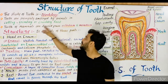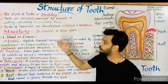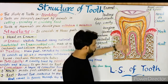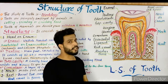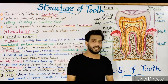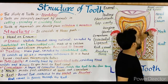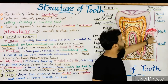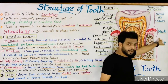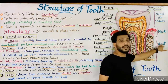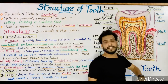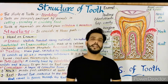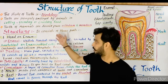Looking at the diagram of a tooth, there are three main parts. The exposed part is called the crown or head. The middle part is called the neck. The lowermost part is known as the root, which is embedded inside the jawbone.